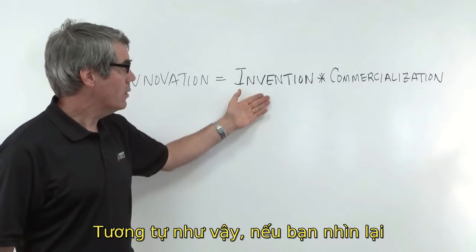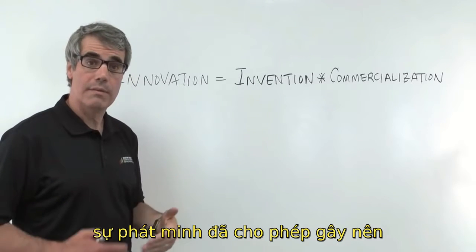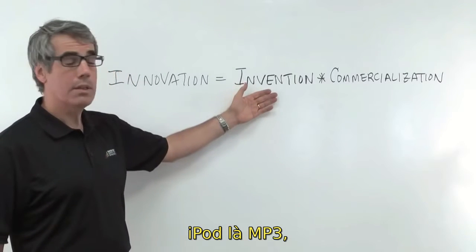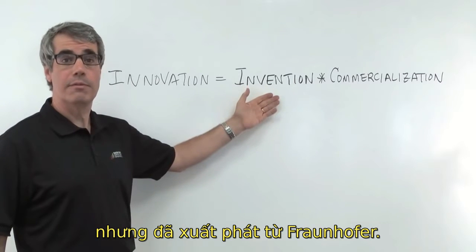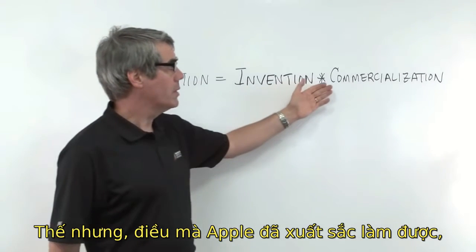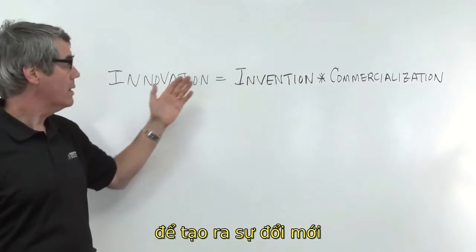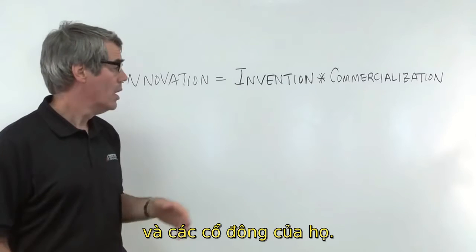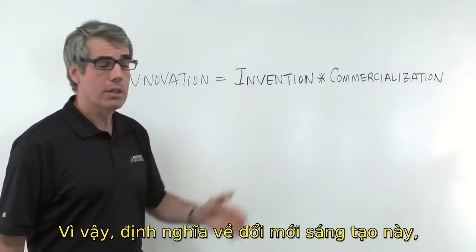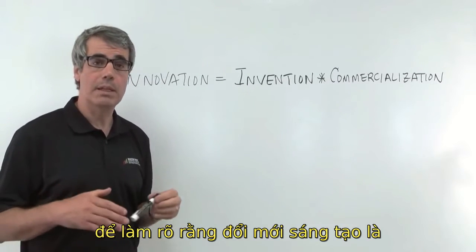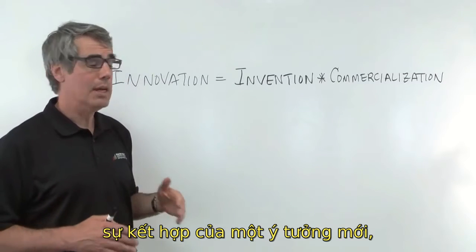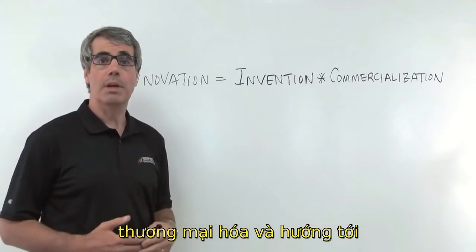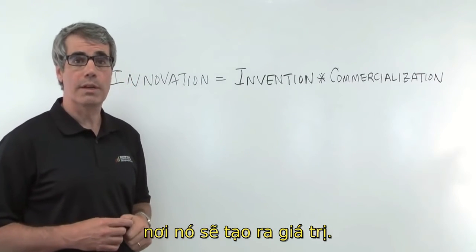Likewise, the invention for the underlying enabling technology of the iPod was MP3, which did not come from Apple — it came from Fraunhofer. But what Apple was terrific at was commercialization to create innovation and to create great value for their customers and shareholders. So this definition of innovation is very helpful in making clear that innovation is a combination of a new idea or new technology, which then must be commercialized and mapped to some customer in the real world where it will generate value.